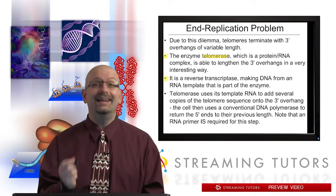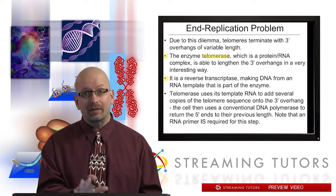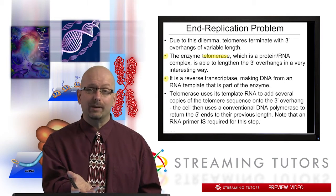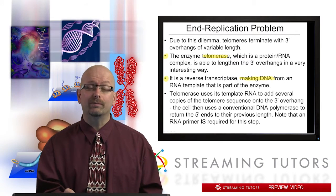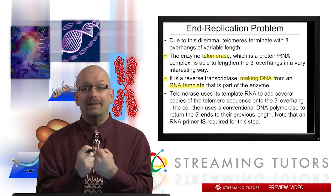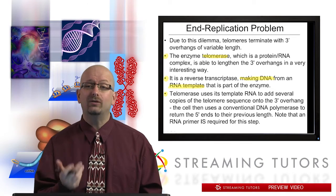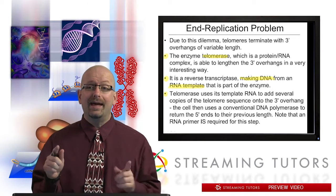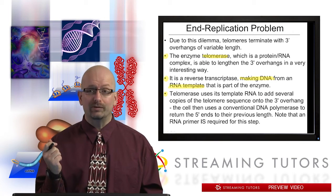Interestingly, telomerase is a reverse transcriptase. Reverse transcriptase was discovered in retroviruses — this is not the exact same type — but what it does is take RNA as a template and make DNA from that. So it makes the DNA necessary to fill in the chromosome from an RNA template that the enzyme carries along with it as a very tight complex. Telomerase uses this template RNA to add several copies of the telomere sequence onto the three prime overhang, and then the cell can use conventional DNA polymerase to return the five prime ends to their previous length.